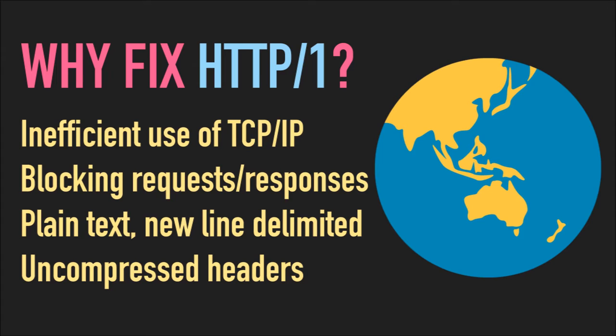When you have one request, you have to wait for its response before you can send the next request. This kind of blocking means you're going to have compounding latency. If you have a request that goes around the world, you're doing 300 or 400 milliseconds, and then the second request will again take that amount of time. It becomes very noticeable — basically impossibly expensive to do lots and lots of small requests.